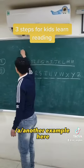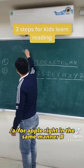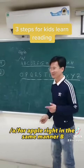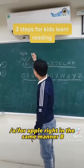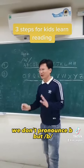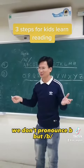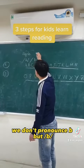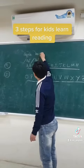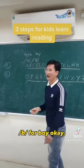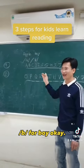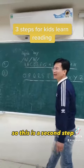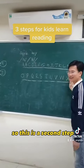Another example: 'A' for apple. In the same manner, for 'B', we don't pronounce it as 'bee', but as 'buh'. B for boy. So this is the second step.